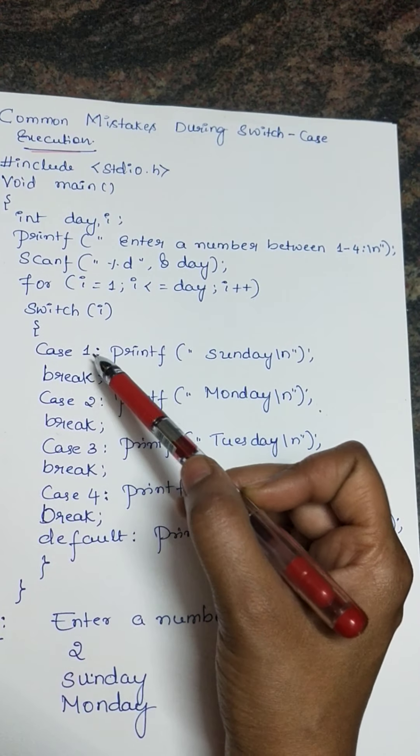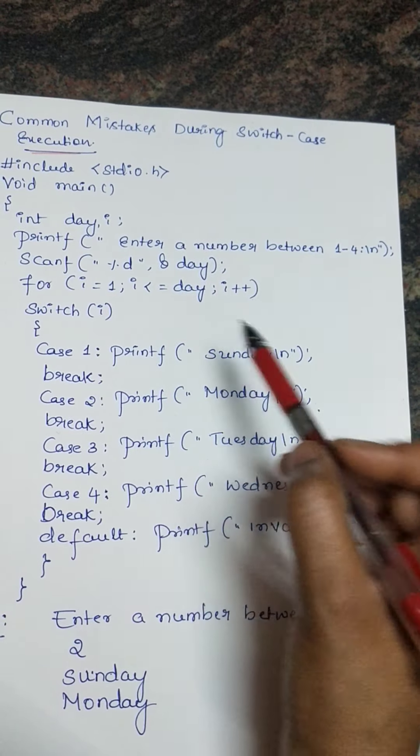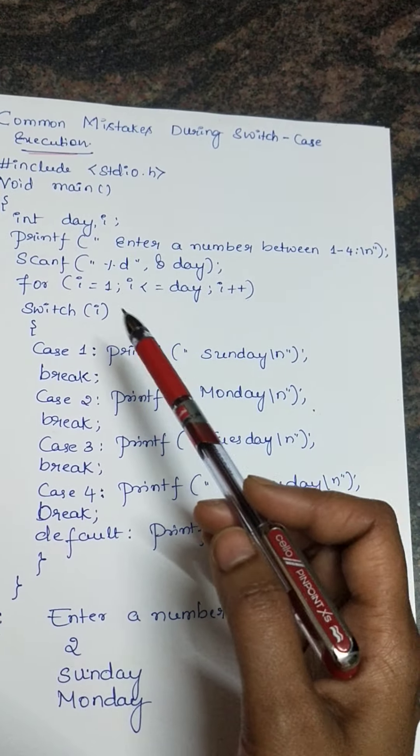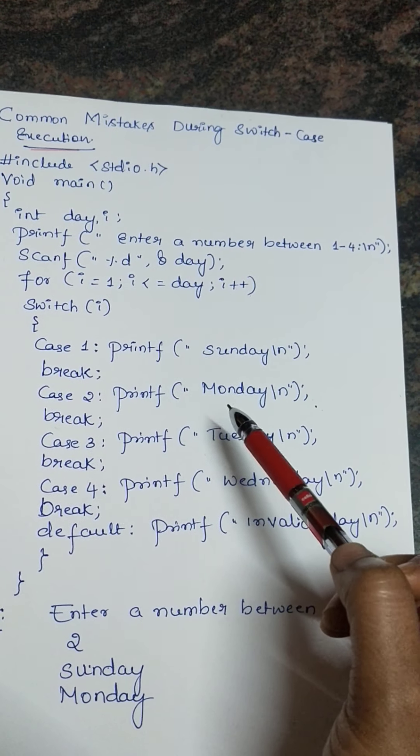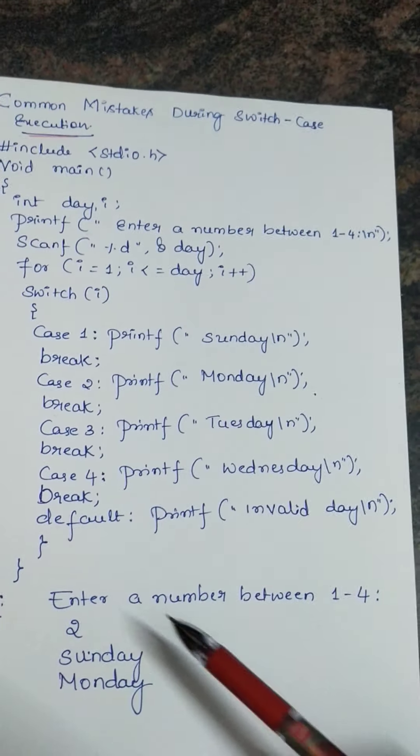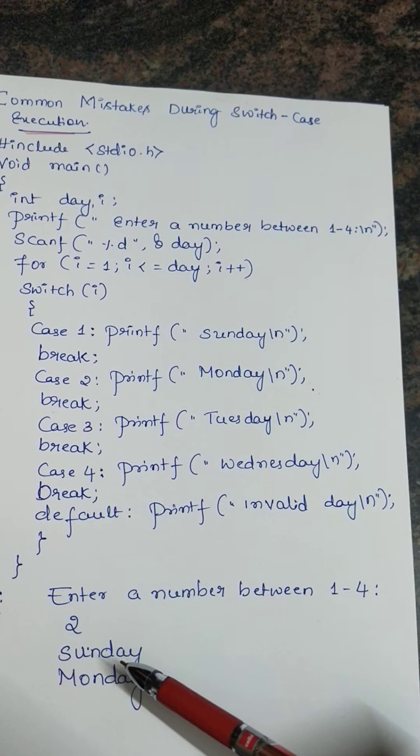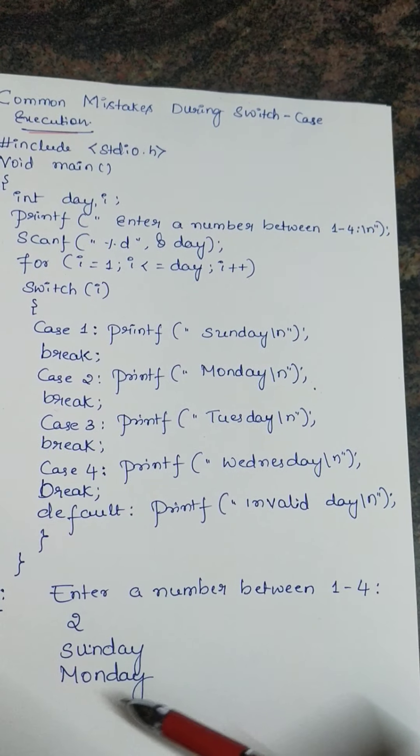Again if I enter 2, for the first time it will go to case 1 and it will print Sunday, and next it will go to the for loop, accept the next value, and it will print Monday. So you can see the output here. Enter the number between 1 to 4. If I mention 2, it will display Sunday and Monday.